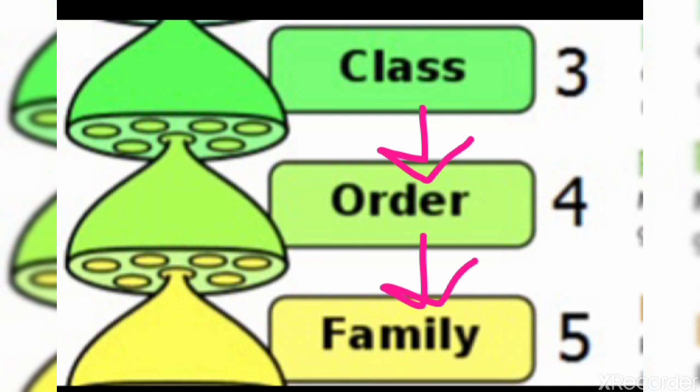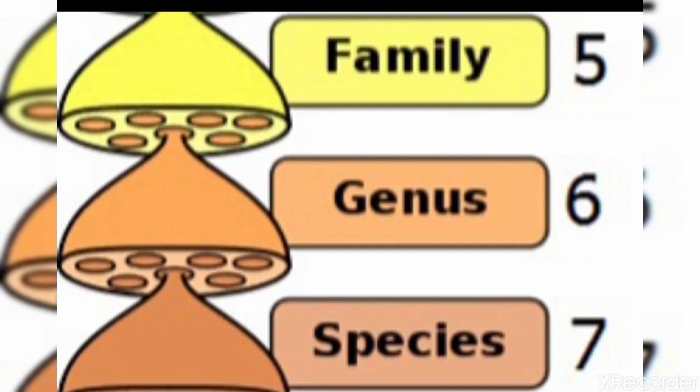Those organisms which belong to the same family, their structures will be very similar. Every family is divided into many genera — the singular form is genus, plural is genera. The members of a genus are much more similar than those of a family. Each genus is further divided into many species. Species is the smallest unit of classification. Members of a species resemble each other very closely, have similar body parts, live in similar habitats, and can reproduce among themselves.